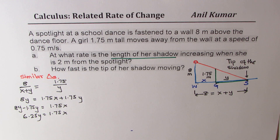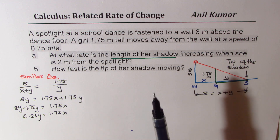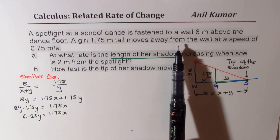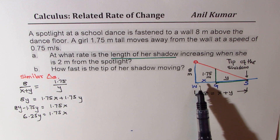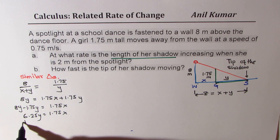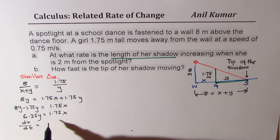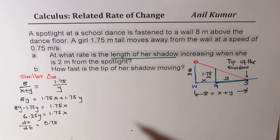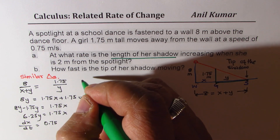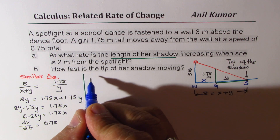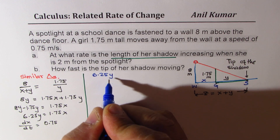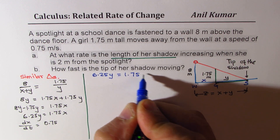We are also given that the girl moves away from the wall at a speed of 0.75 m/s, so dx/dt = 0.75. We got our equation and we know how to find rate of change from here. Let's rewrite this equation and differentiate both sides: 6.25y = 1.75x. Differentiating with respect to time on both sides.